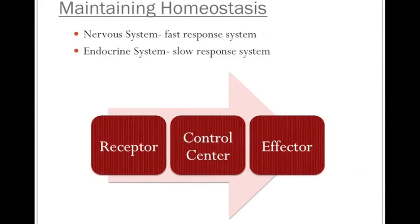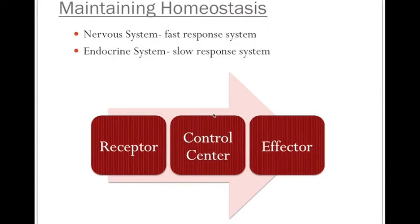As we struggle to maintain homeostasis and therefore health, our two main systems that help recognize and control our homeostatic feedback are the nervous system and our endocrine system. The nervous system is our fast response system, whereas our endocrine system is our slow response system. Basically how it works: there's a receptor that picks up that there is a homeostatic imbalance. When the receptor figures this out, it sends this information to our control center — generally our brain or spinal cord — where we figure out what we need to do. Whatever it is that we need to do to correct the homeostatic imbalance would be our effector.